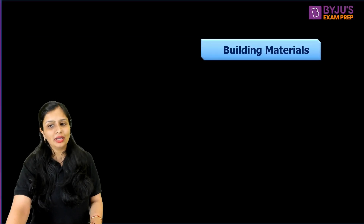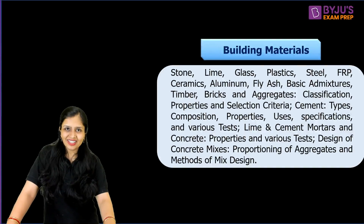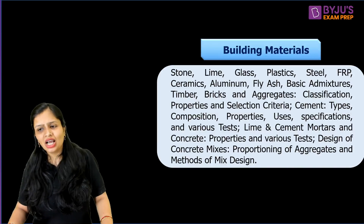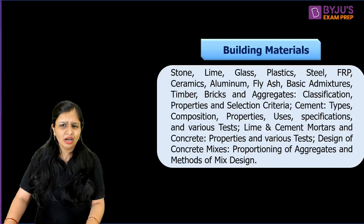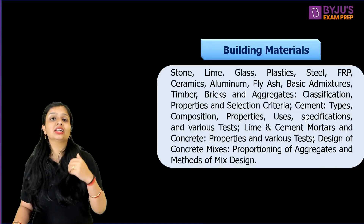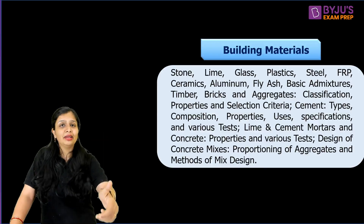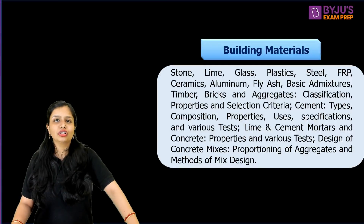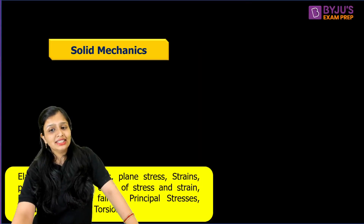For Paper 1, the first topic is Building Materials. Unlike GATE where building materials barely gets one mark, in ESE it is heavily tested. You need to study stones, lime, glass, plastic, steel, FRP, ceramics, aluminium, fly ash, admixtures, timber, bricks, and aggregates — everything in depth. For bricks, know the types, compressive strength, maximum and minimum values. For timber, study seasoning, defects, and all related aspects.